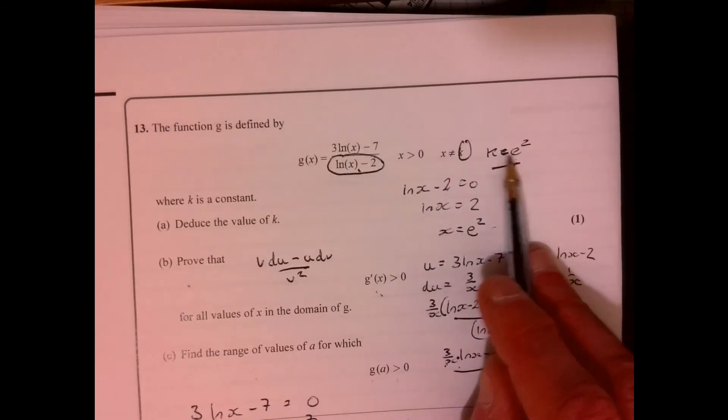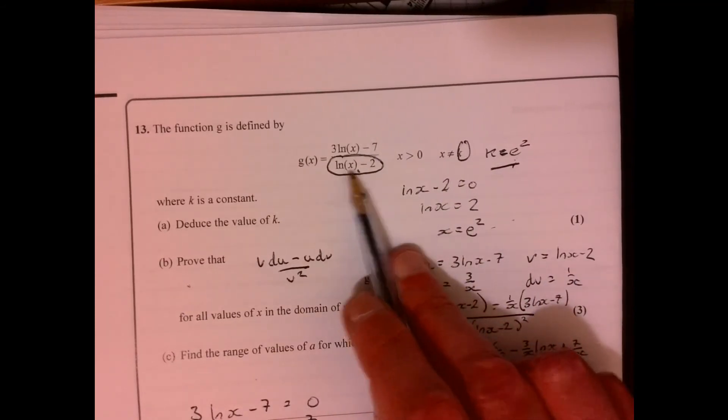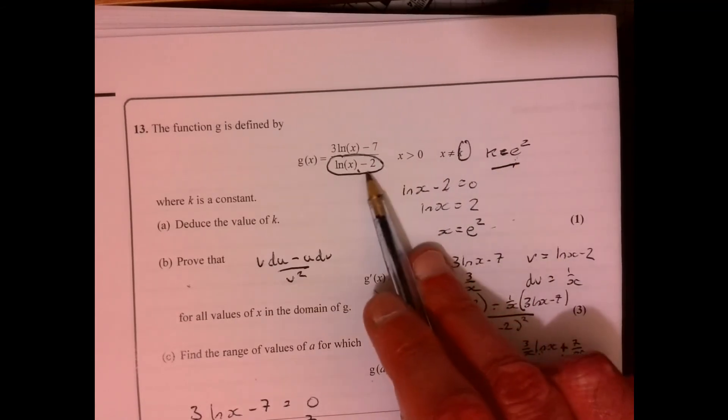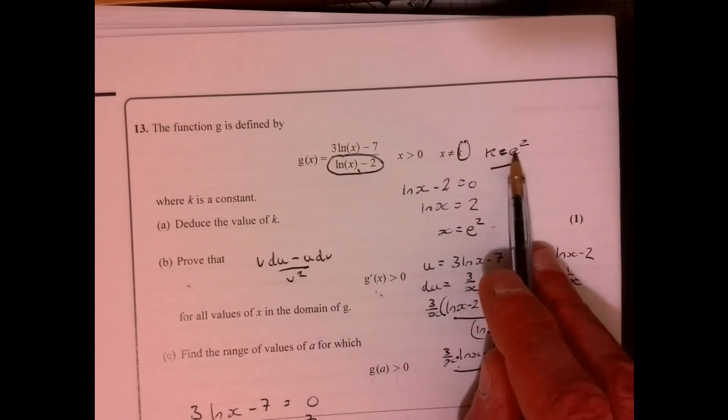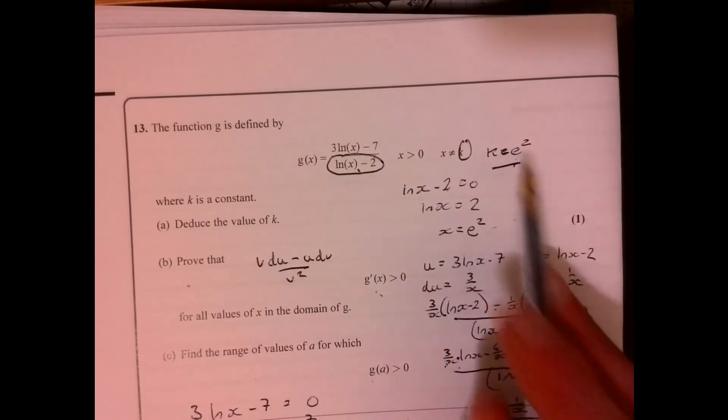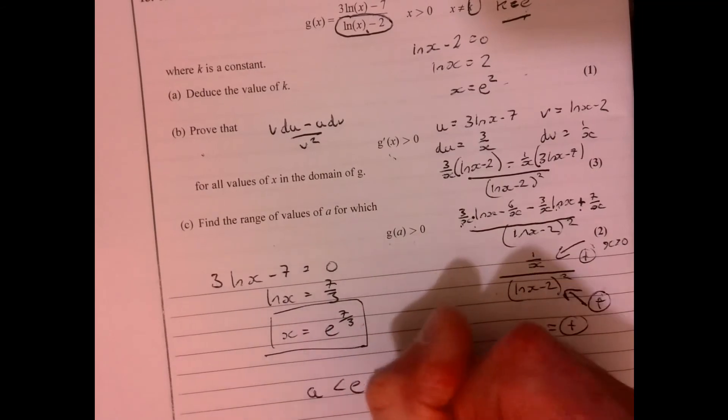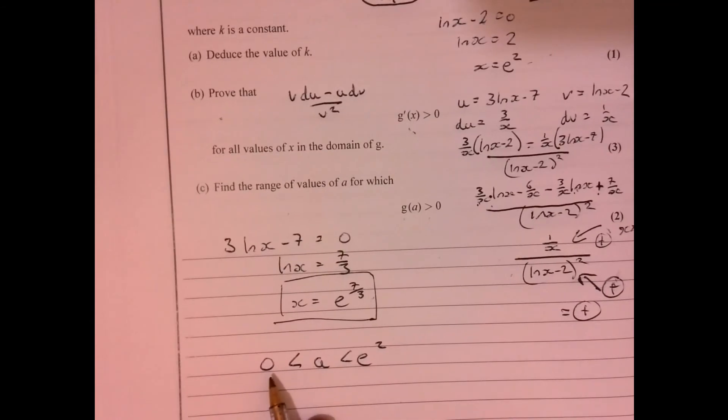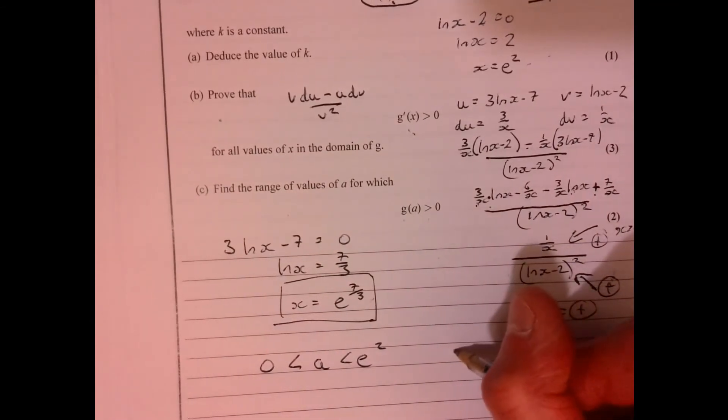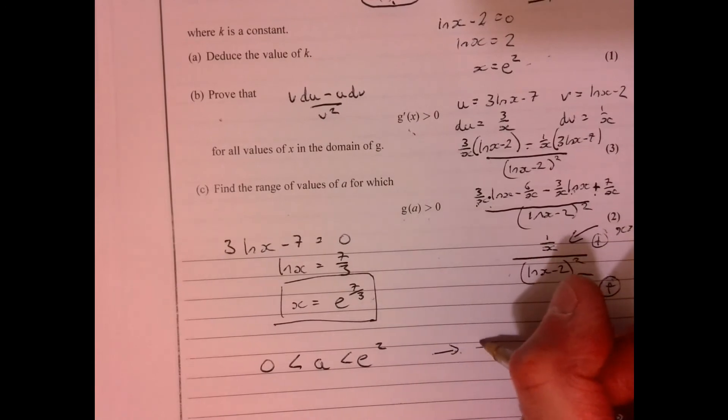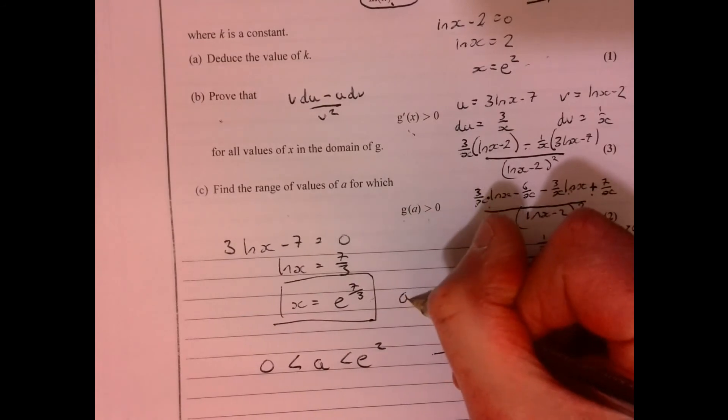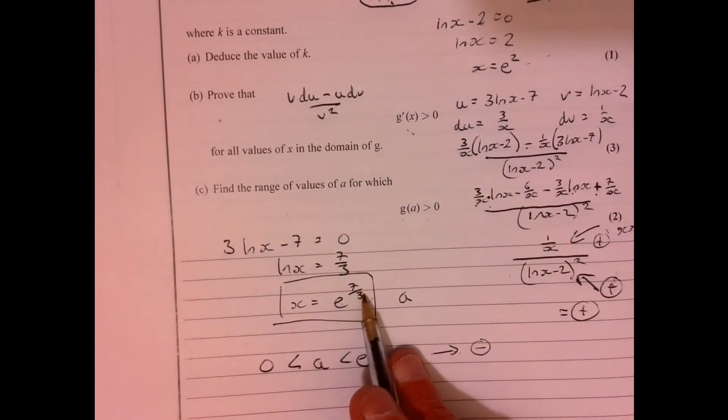Now, what's going to happen when I've got this A that's going in here, when it's less than this? So when it's more than that, then that there is going to be positive. When it's between 0 and e squared, so when A is between this and this, then the denominator will be negative. And when A is less than e to the 7 over 3, then it's going to be negative.